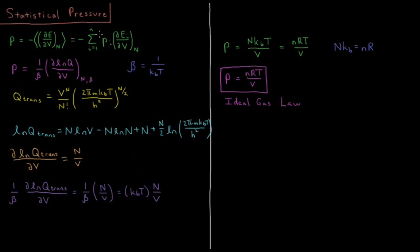This is equal to the negative sum over all the states of the system of the probability of each of those individual states times the partial derivative of that energy level with respect to volume at constant number of particles.